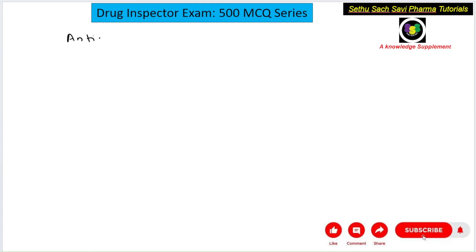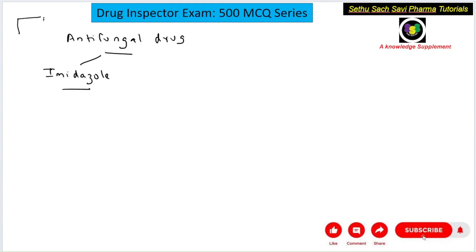In the case of antifungal drugs, some drugs have a basic nucleus called imidazole. Imidazole is a five-membered ring with two nitrogen atoms — at the first and third positions. This structure is called imidazole.